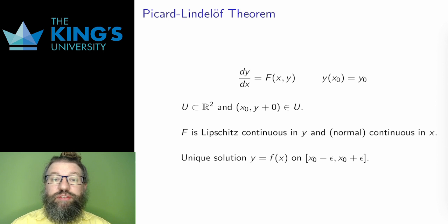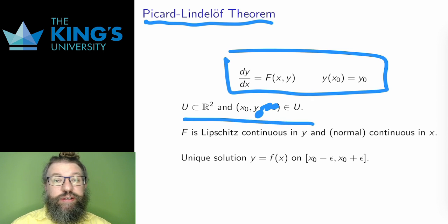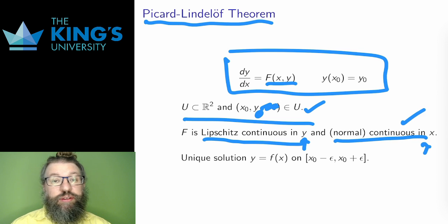Here is the theorem about both existence and uniqueness. It is called the Picard-Lindelöf theorem, named after Emile Picard, a French mathematician, and Ernst Lindelöf, an early 20th century German mathematician. It has the same start as before, a first-order ODE with isolated derivative and an initial condition, an open set U which contains the point on the function matching that initial condition. Now, instead of F just being continuous in both variables, it needs to be Lipschitz continuous specifically in the y variable. Normal continuity in x is sufficient. Then, with this one extra condition, we're guaranteed a unique solution. Again, the solution is only guaranteed on a small domain.